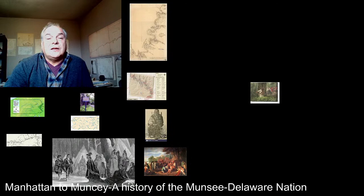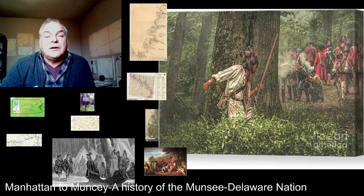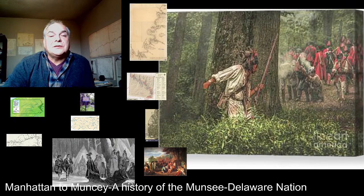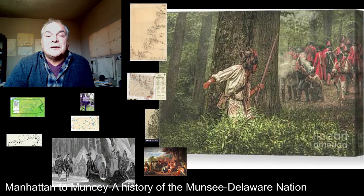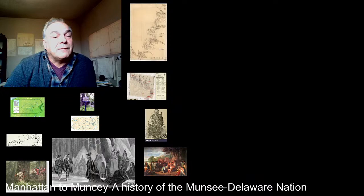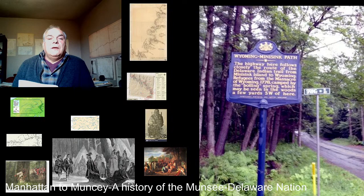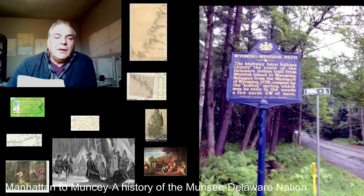During this time the Munsees and the Delawares had been losing their lands in Pennsylvania and were getting unhappy about it. The British were starting to come around as an army into the area. Here's a picture of a native person taking a peek at this British force coming through the woods. And here's a final picture — a plaque in the Wyoming area talking about what's known as the Munsee Path.